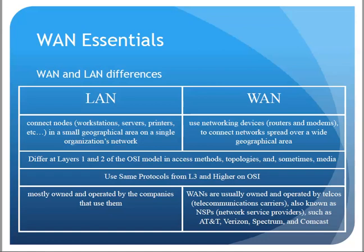Let's look at WAN and LAN differences. LANs are focused on connecting nodes — workstations, servers, printers, IP phones — in a single business, single floor, or single building. WANs, meanwhile, are used to connect networks together, such as a company network in one city to a network in a different city. They use different Layer 1 and Layer 2 technologies and different access methods.